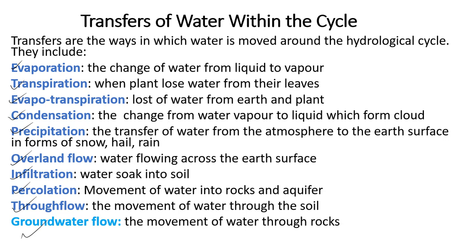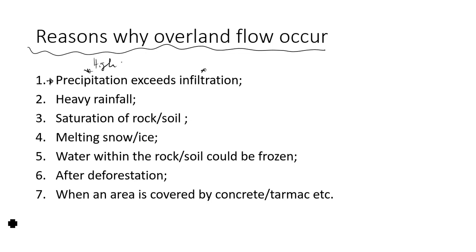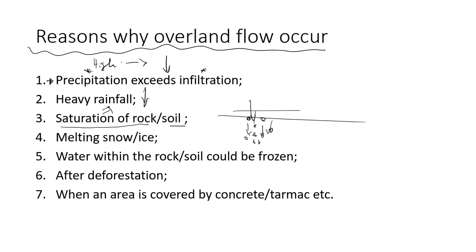Now, reasons why overland flow occurs: one reason is if precipitation exceeds infiltration — if the amount of rainfall is greater than the amount of water that can move into the soil, water will flow on the surface. Heavy rainfall can also make water flow on the surface. Saturation of rocks and soil means the soil is already full of water, so more water cannot infiltrate and the excess flows on the surface.